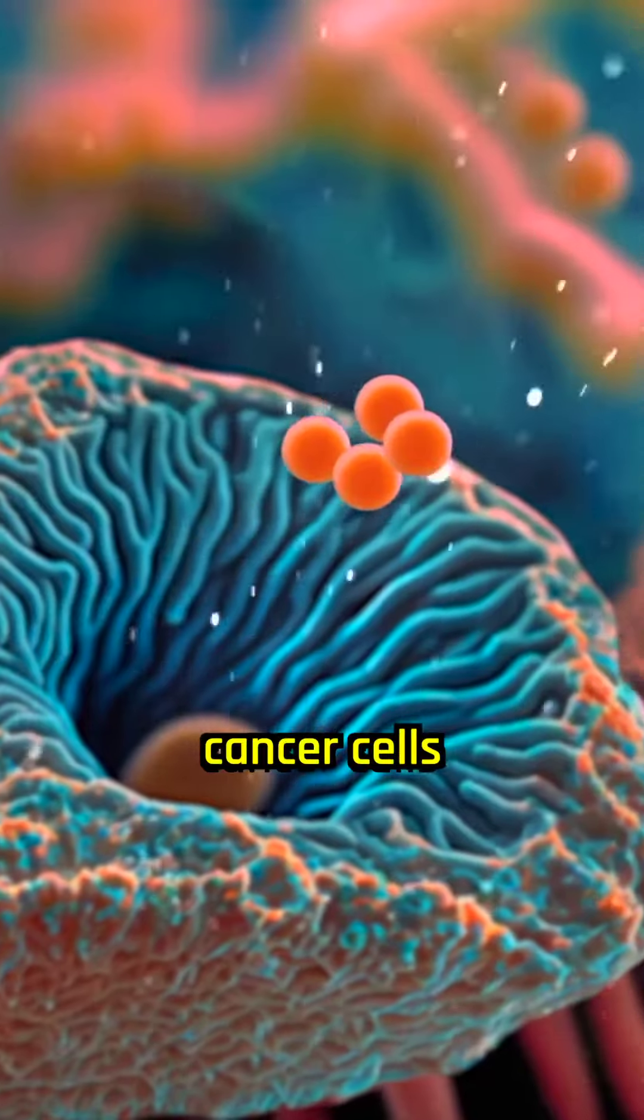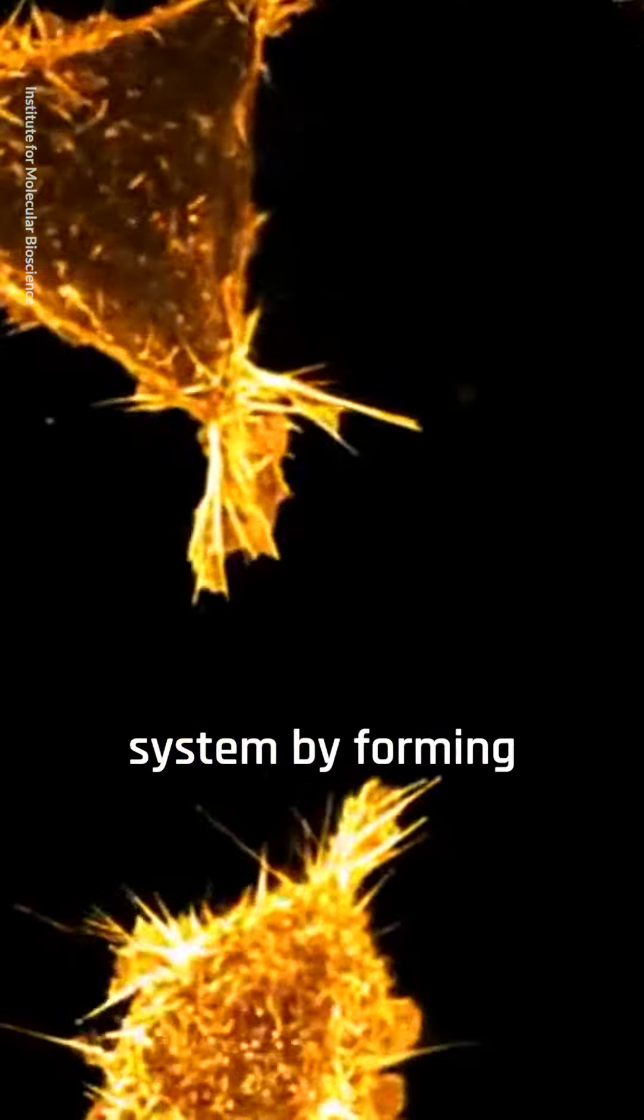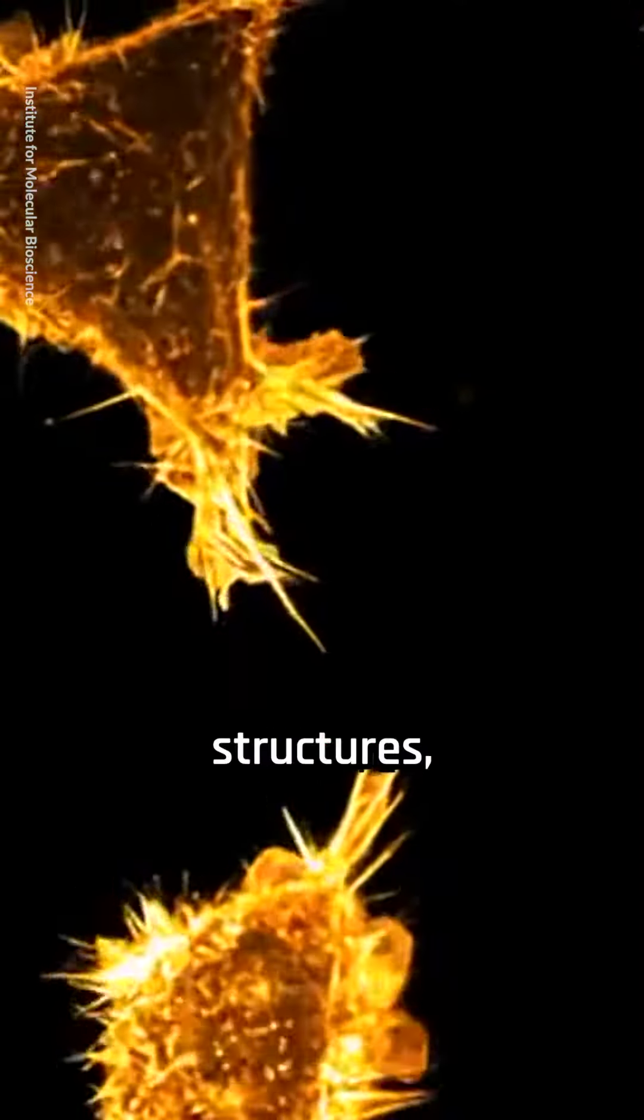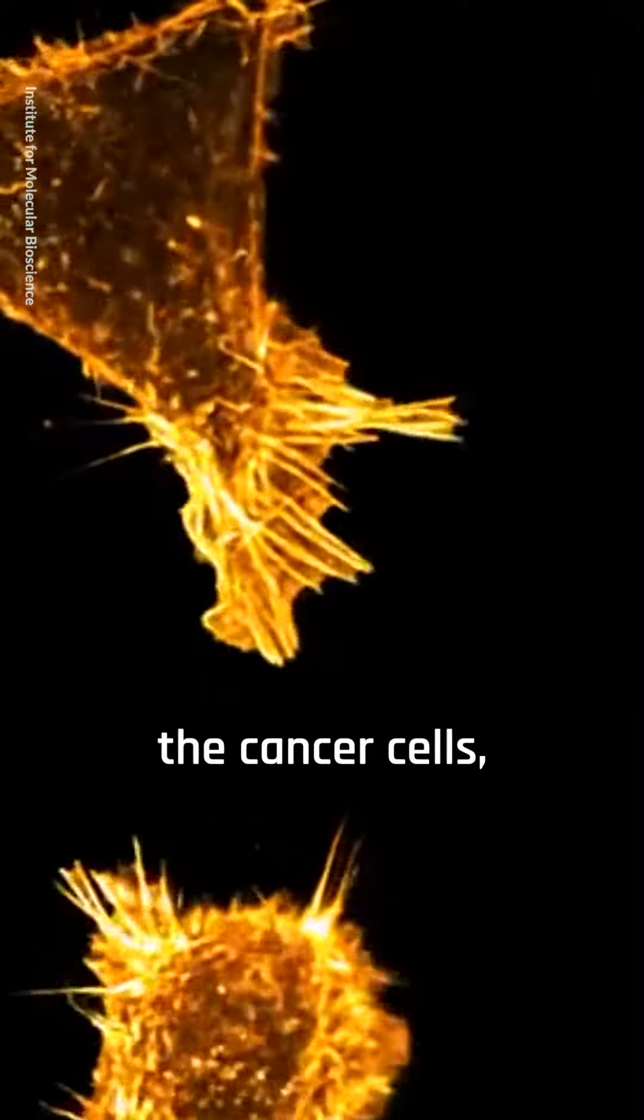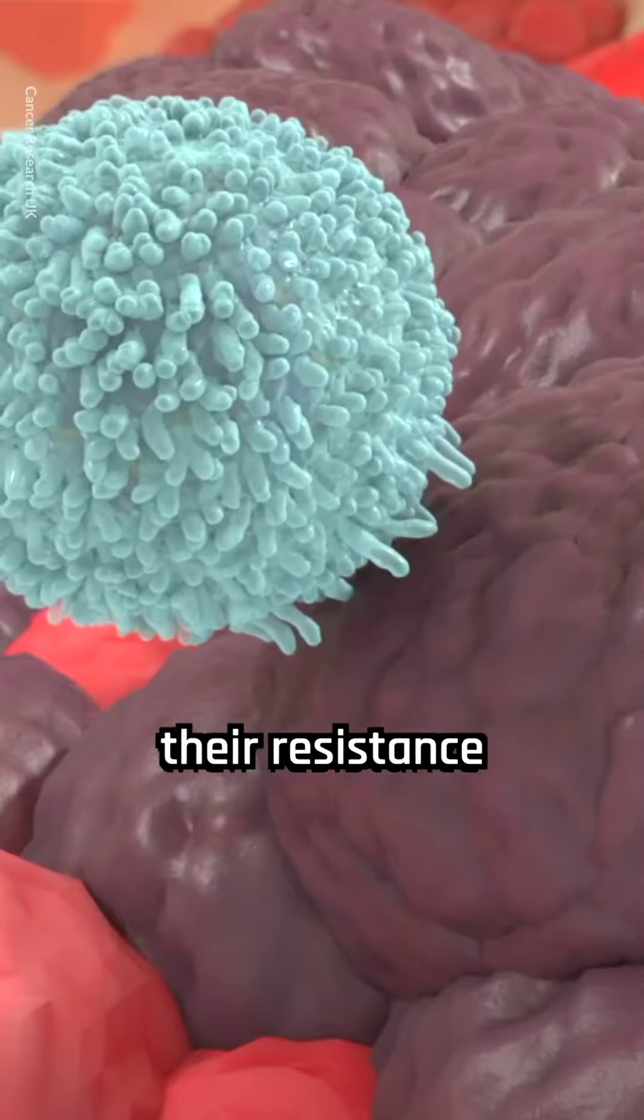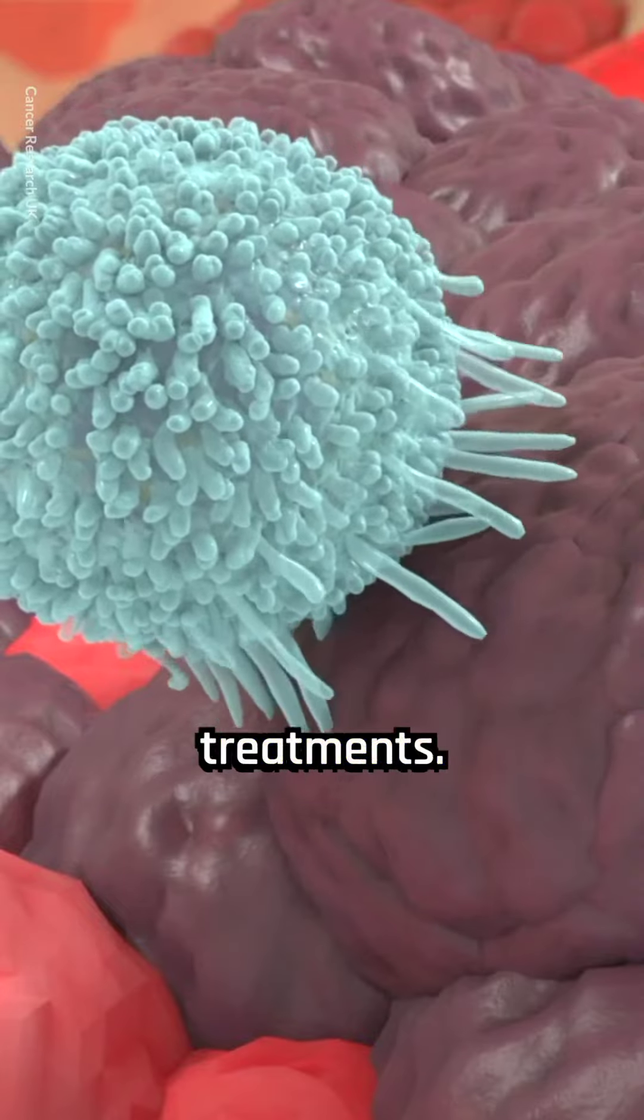Scientists discovered that cancer cells can hide from the immune system by forming cell-in-cell structures, which not only hide the cancer cells but also create a protective shell around them. This increases their resistance to immune responses and cancer treatments.